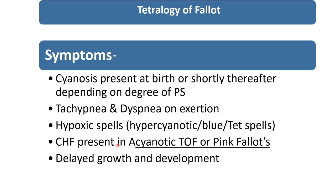Congestive heart failure is present in acyanotic TOF only, not in cyanotic TOF and the extreme form of TOF, because they are having severe pulmonary stenosis, so patient will not develop congestive heart failure. While in acyanotic TOF, patient will have large VSD with mild PS, so congestive heart failure will develop, and also having delayed growth and development.